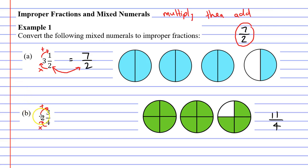4 times 2 is 8. 8 plus 3 is 11. That means our numerator is 11. Remembering that whatever our denominator was for our mixed numeral it needs to be the same as our denominator for our improper fraction being 4.